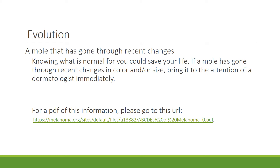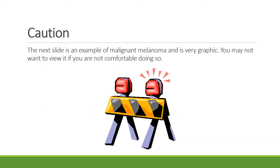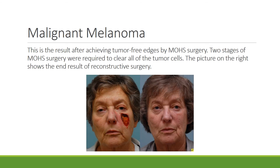For a PDF of this information, please click on the ABCDE's of melanoma link. The next slide is an example of a malignant melanoma and it's very graphic — you may choose not to view it. Someone with a malignant melanoma most often undergoes a Mohs procedure, where the mole is removed and the edges are checked to ensure no cancerous cells remain. If cancerous cells are found at the edges, a larger section is removed until the edges are clear. The picture on the right shows the end result of reconstructive surgery.